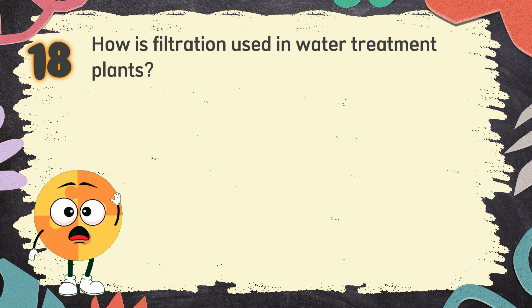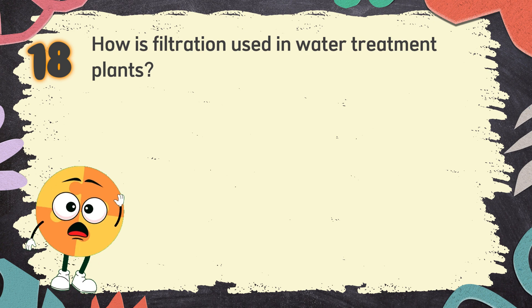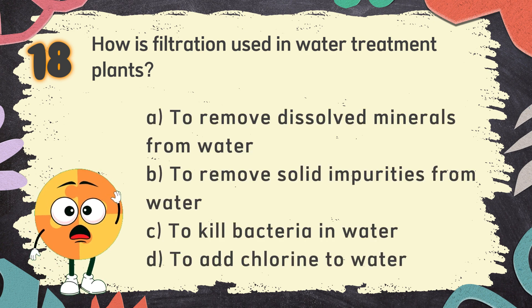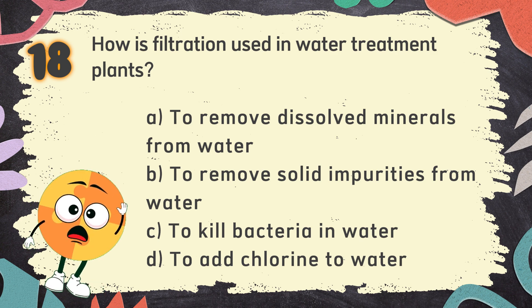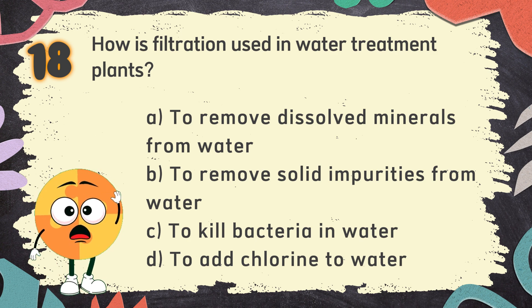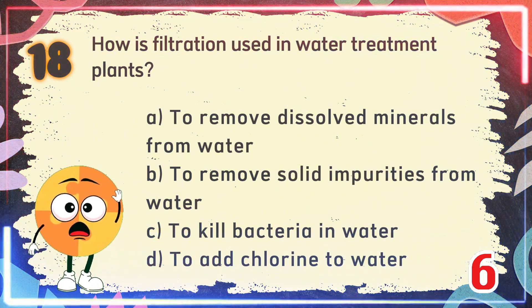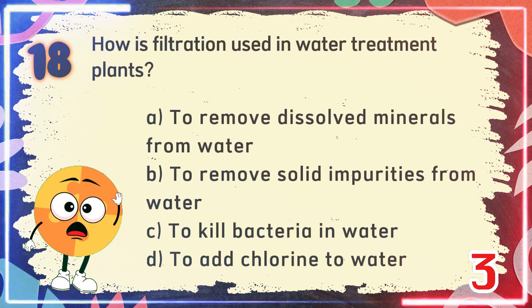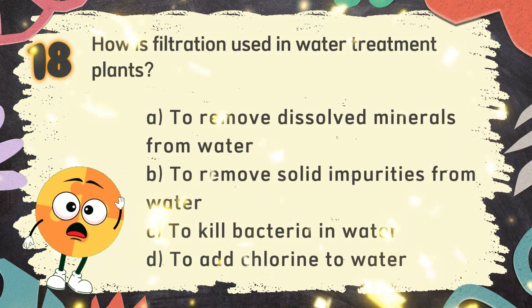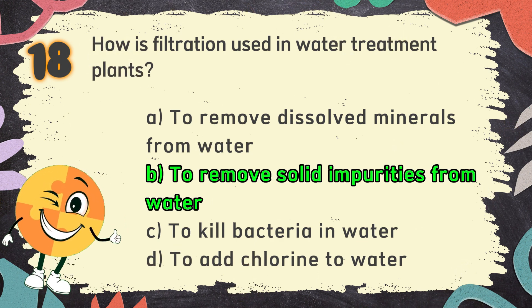Number 18. How is filtration used in water treatment plants? The choices are: A. To remove dissolved minerals from water. B. To remove solid impurities from water. C. To kill bacteria in water. D. To add chlorine to water. The correct answer is B: To remove solid impurities from water.